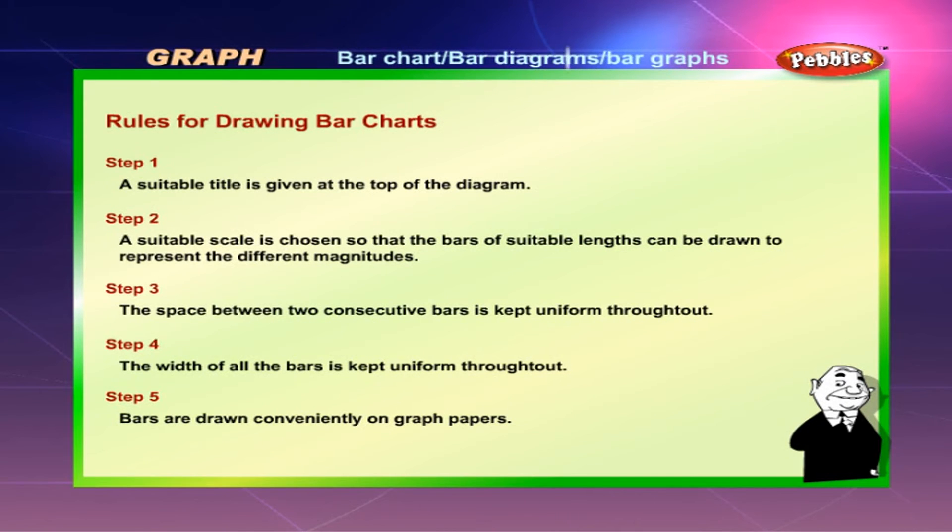Let us now see the rules for drawing bar charts. Step 1: A suitable title is given at the top of the diagram. Step 2: A suitable scale is chosen so that the bars of suitable lengths can be drawn to represent the different magnitudes. Step 3: The space between two consecutive bars is kept uniform throughout. Step 4: The width of all the bars is kept uniform throughout. Step 5: Bars are drawn conveniently on graph papers.